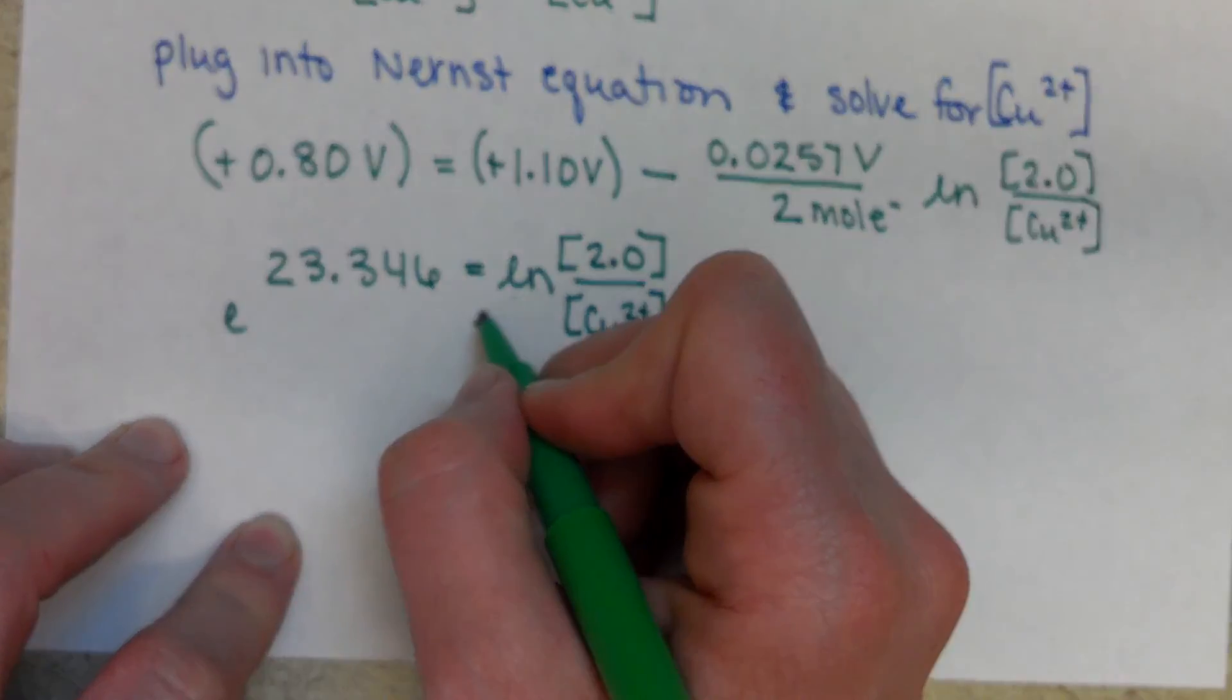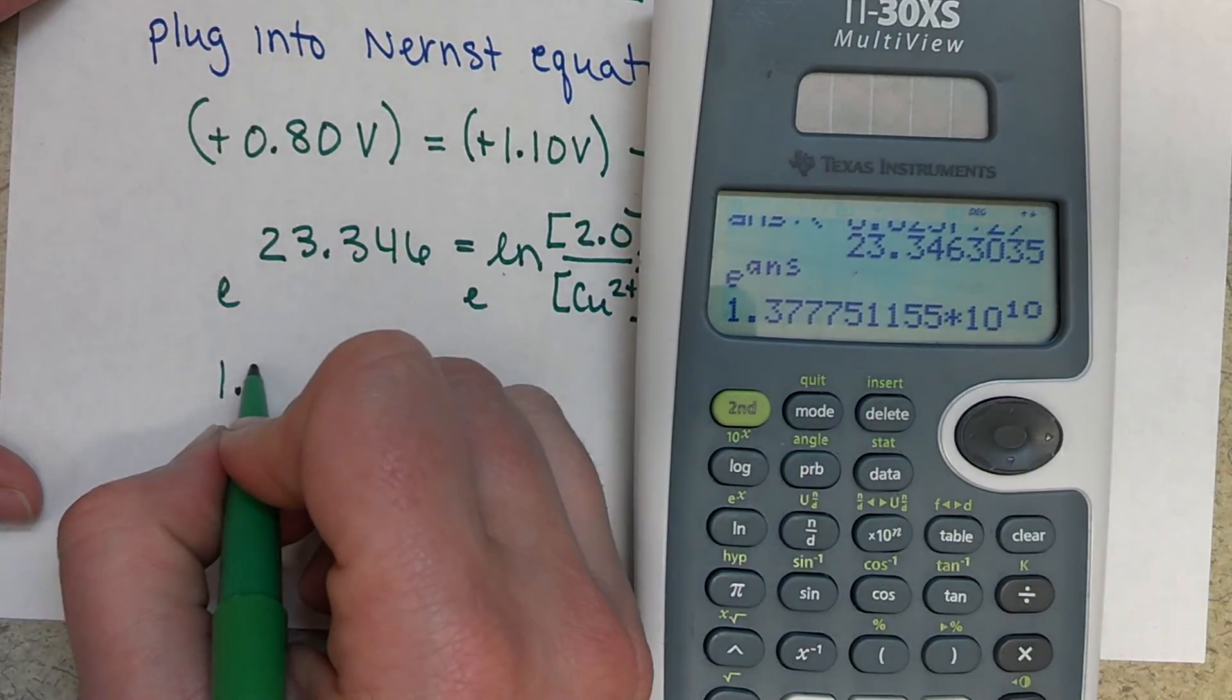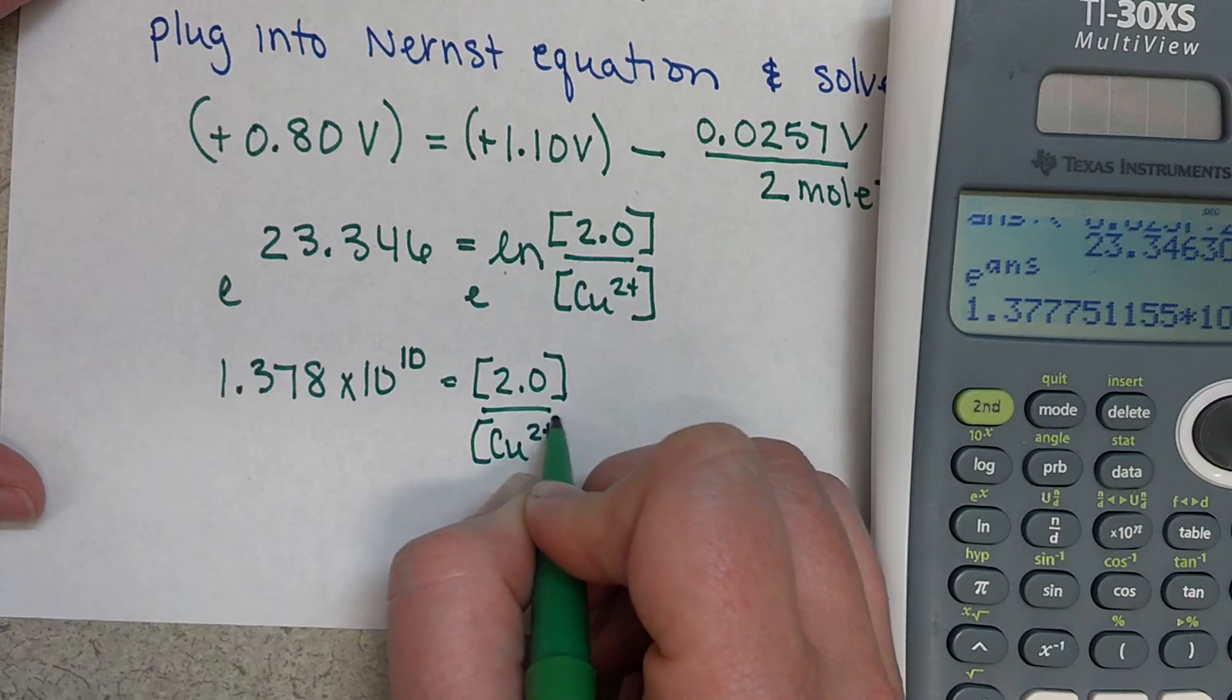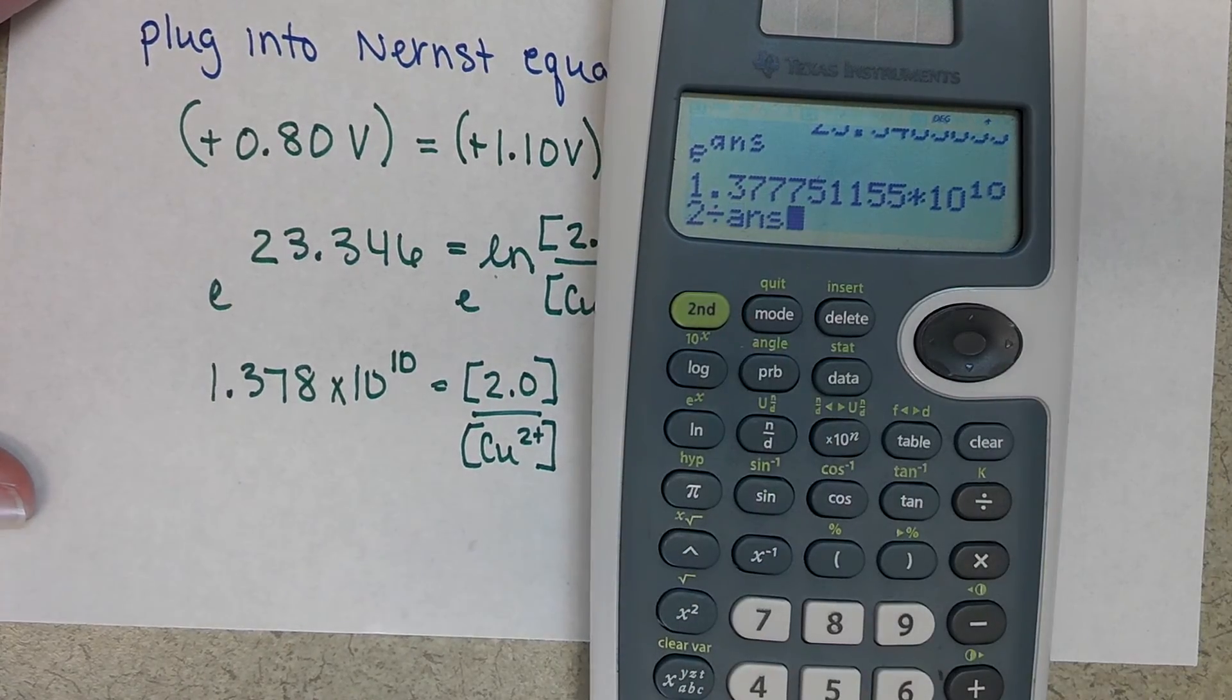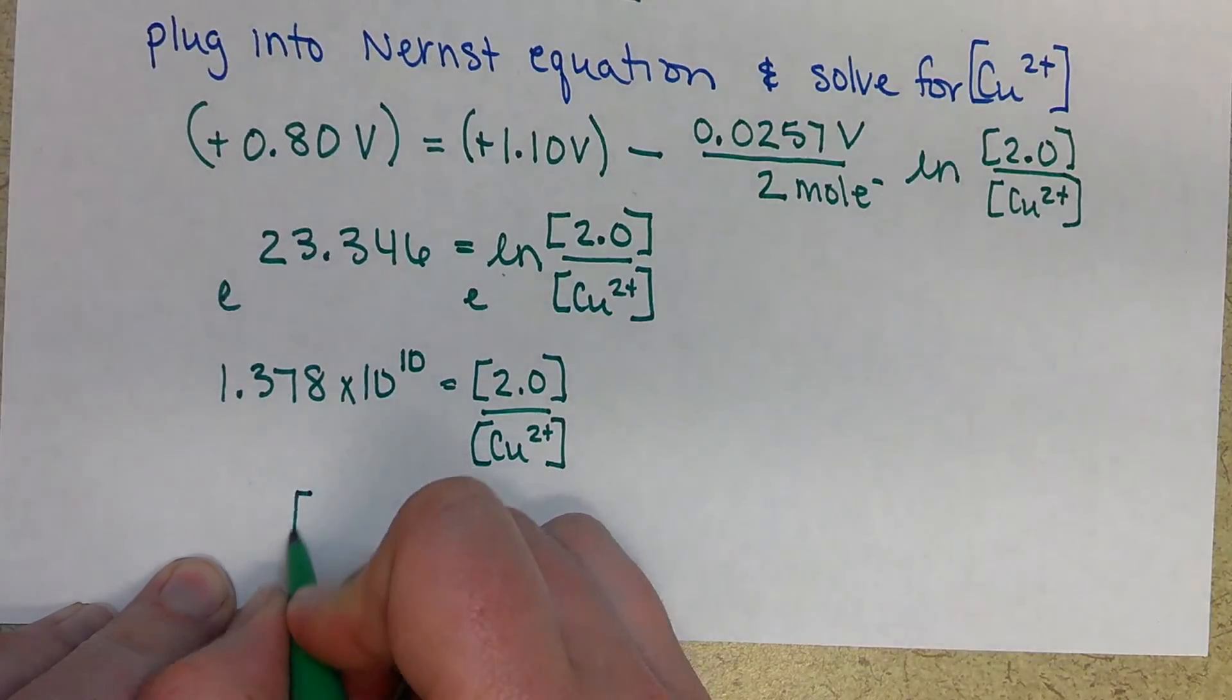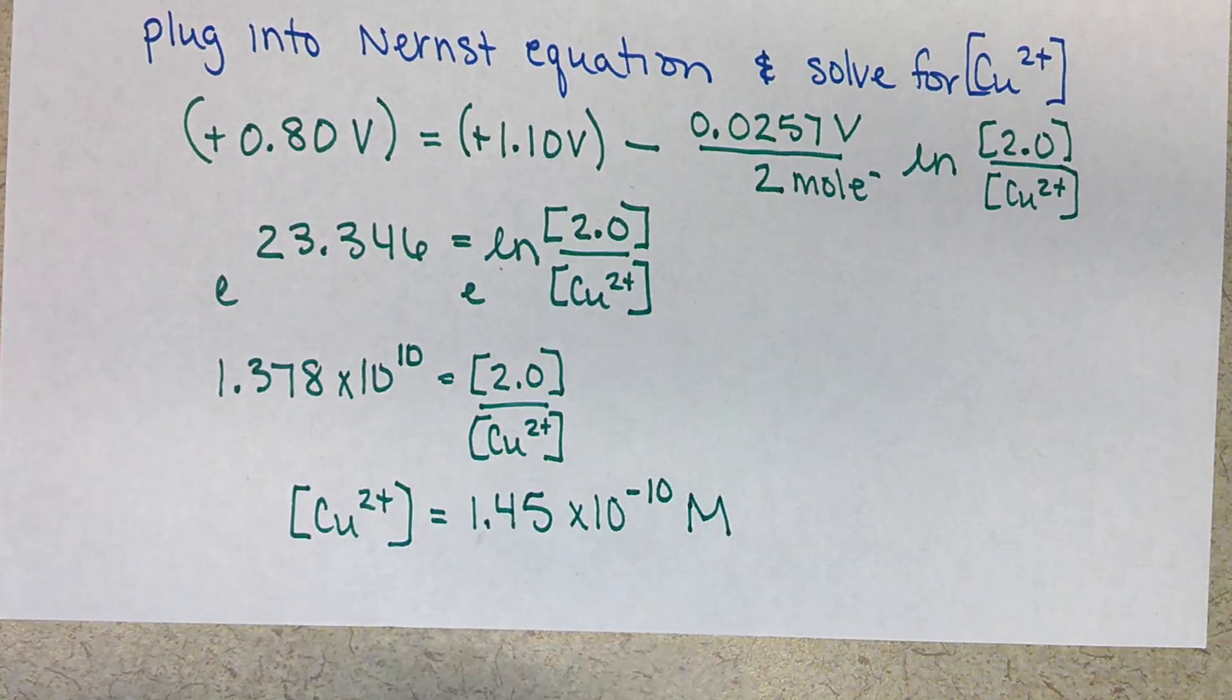To get rid of my natural log, we'll take E to the whatever we're looking for. So E of my previous answer, and I get 1.378 times 10 to the 10. And I get a concentration of copper two plus ion of 1.45 times 10 to the negative 10. All of our concentrations here are in molarity. So there you have it.